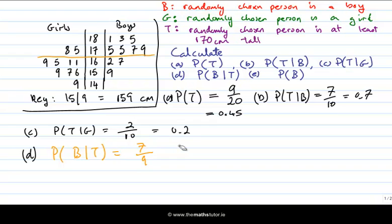Note that P(T|B) is different from P(B|T) — and that's true in general, they are not the same. The order in conditional probabilities is very important.